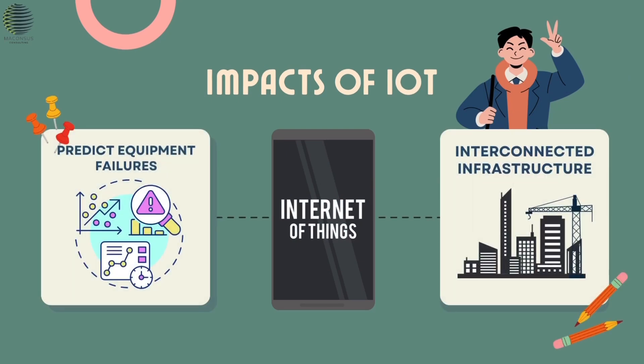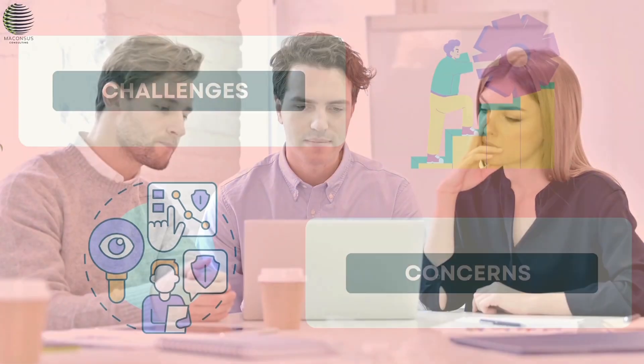The Impact of IoT. IoT holds immense potential to transform various sectors. In industries, IoT facilitates predictive maintenance, enabling companies to predict equipment failures before they occur, thus optimizing efficiency and reducing downtime. In smart cities, IoT enables interconnected infrastructure for efficient resource management, traffic control, and environmental monitoring.